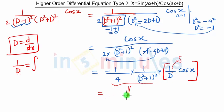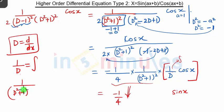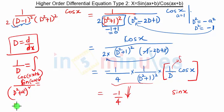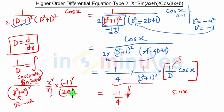This part will remain as it is. The integration of cos x is sin x. Minus 1 by 4 — and we know that whenever we have (D² + a²)^r upon sin(ax + b) or cos(ax + b), and we put D² equal to minus a², this term becomes zero. Since this part was creating a problem, the solution is x^r upon r factorial into (−1)^r upon (2a)^r.